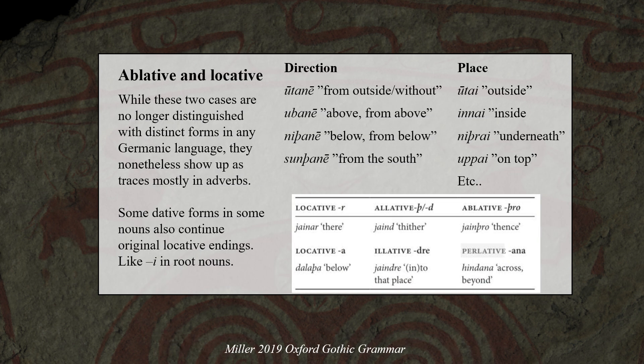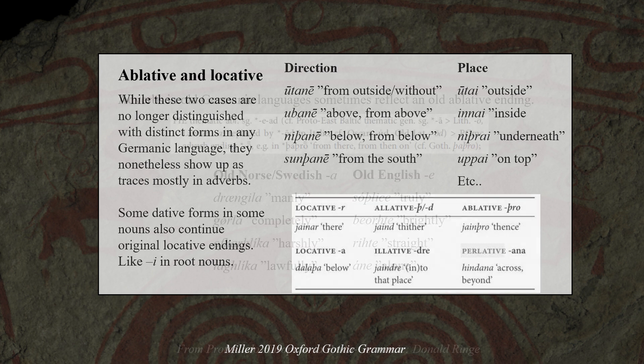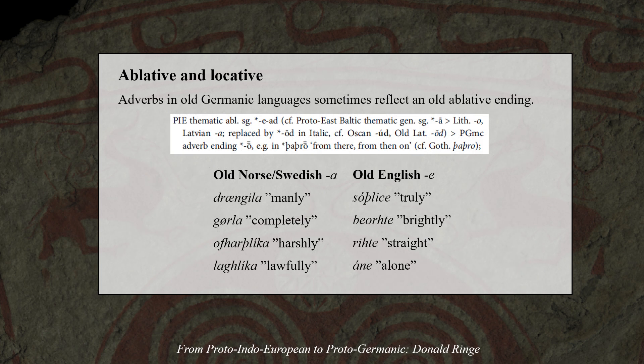While ablative and locative are not found in Germanic nouns as distinct cases, they still left clear traces in adverbs in Germanic languages, and some dative forms continue original locative endings. For example, these ablative and locative forms can be seen in directional and place adverbs in Germanic, many of which still remain in Germanic languages today. Also, a common Germanic adverb ending is often reconstructed as an old ablative.